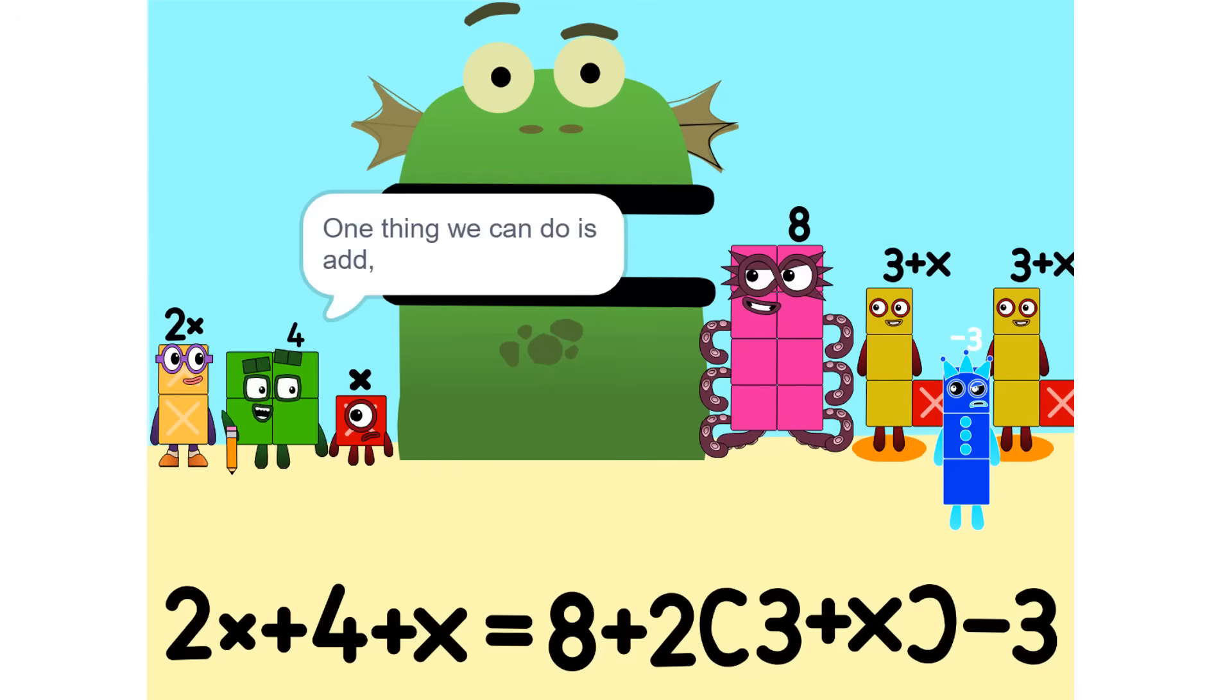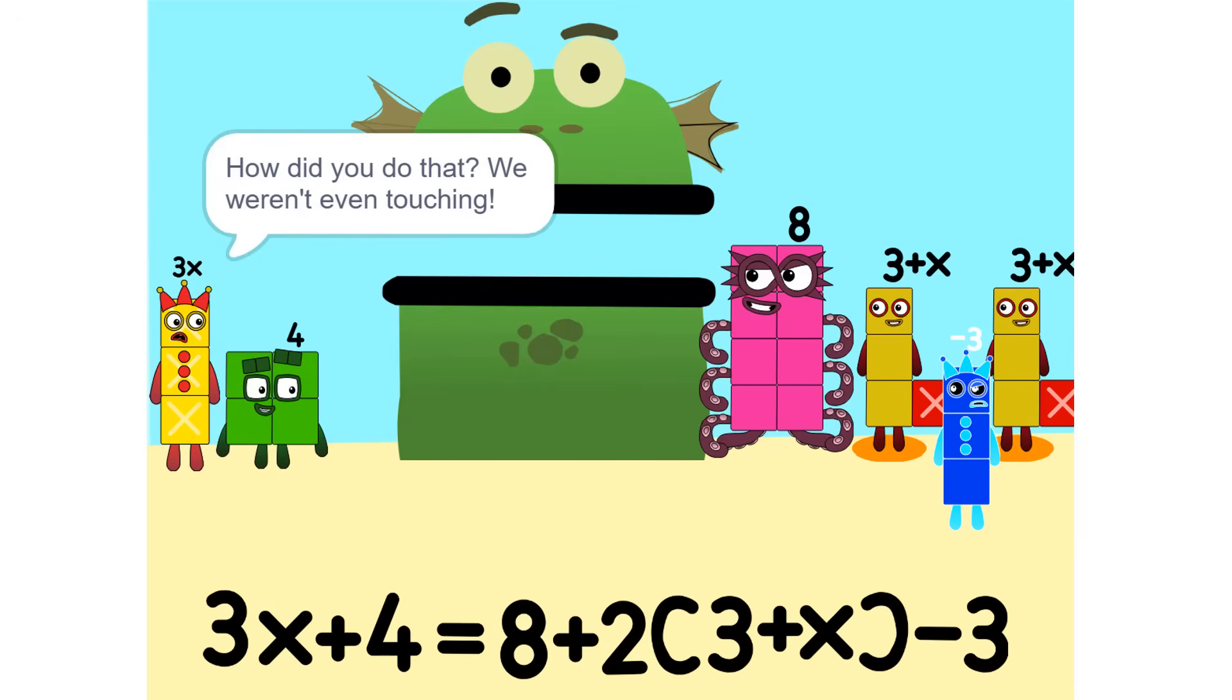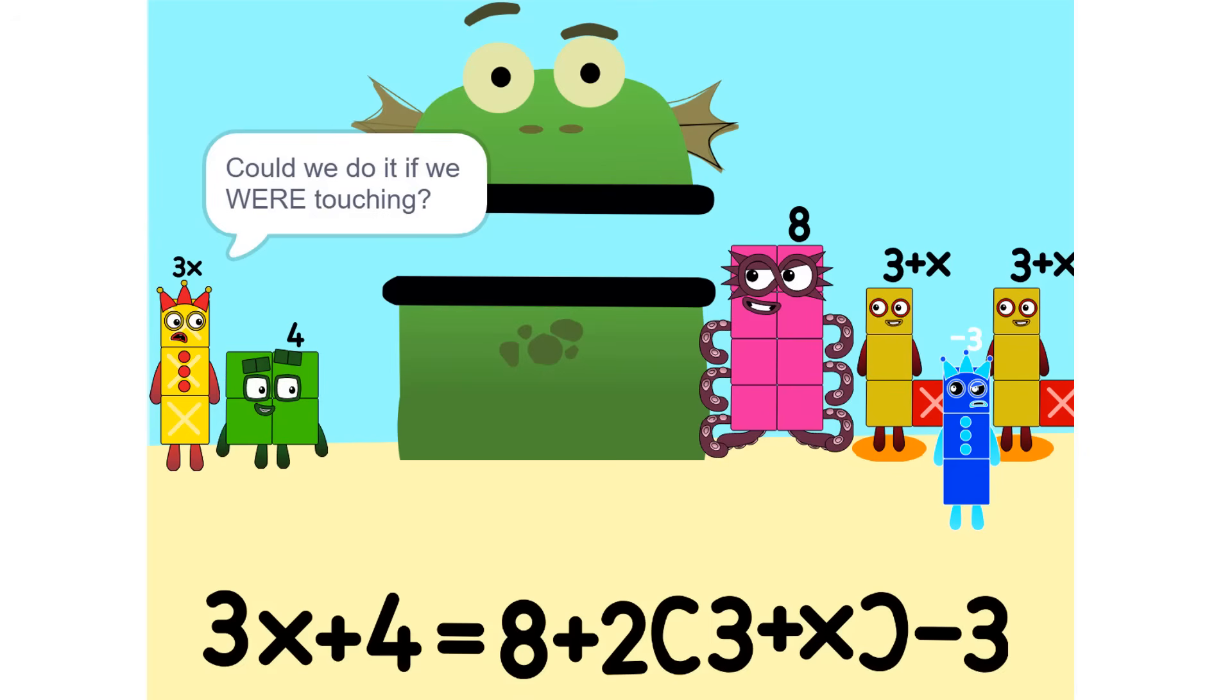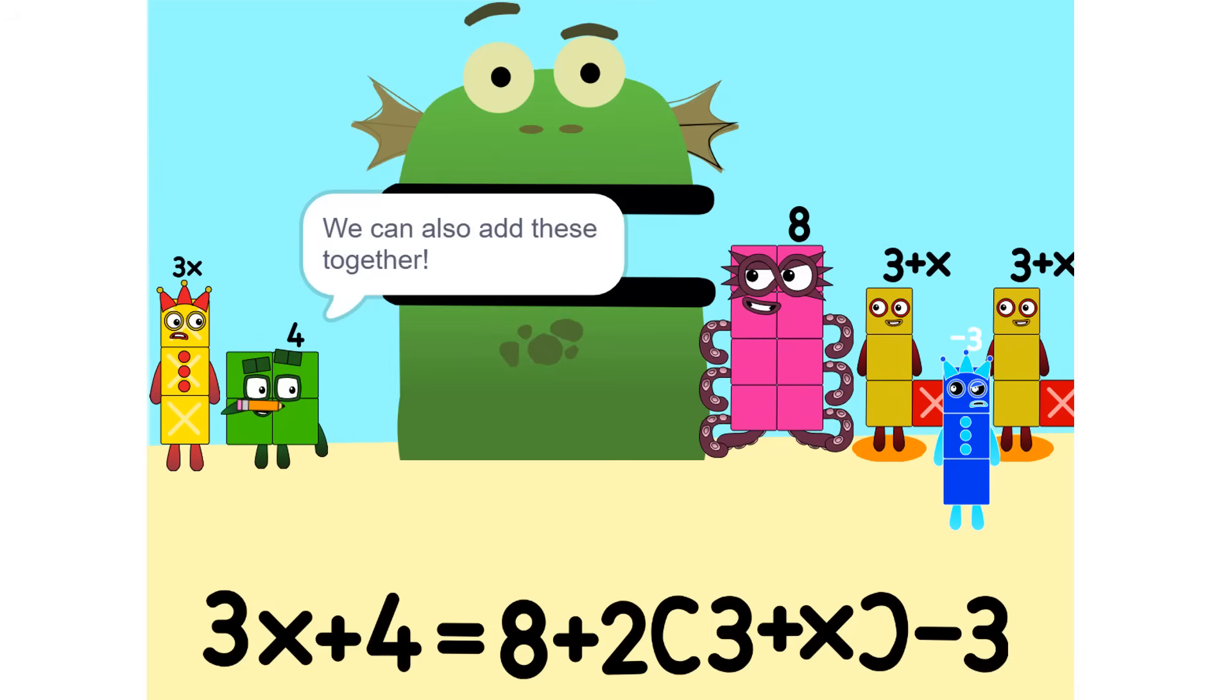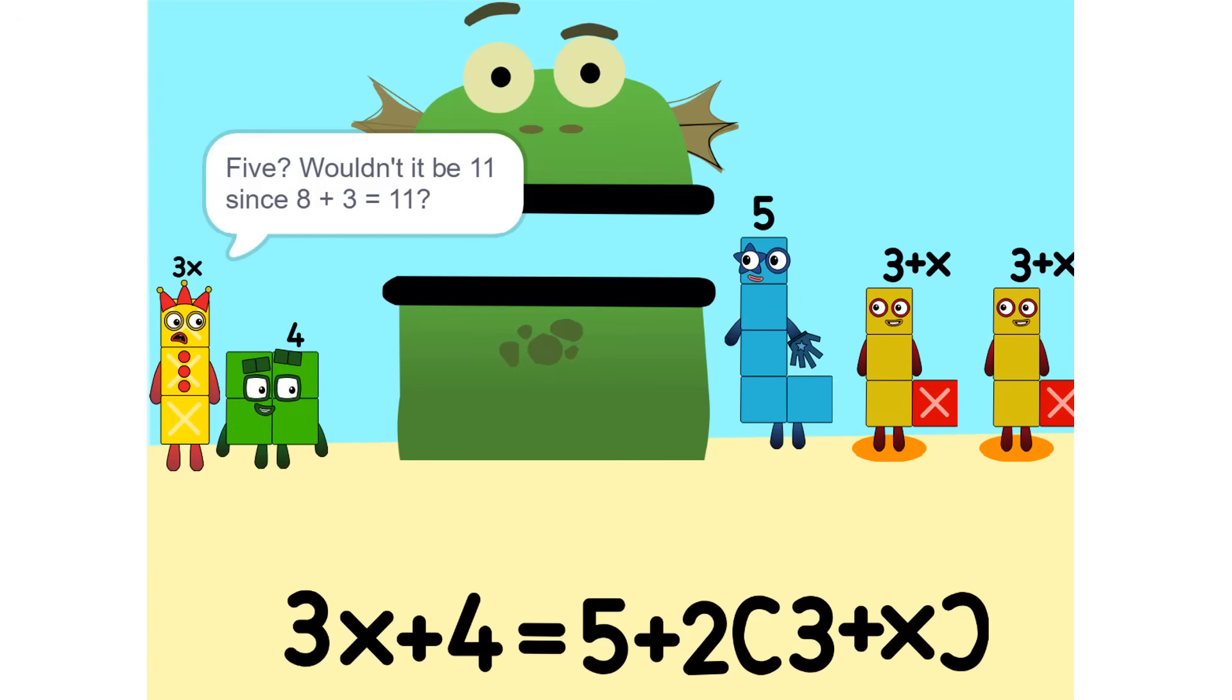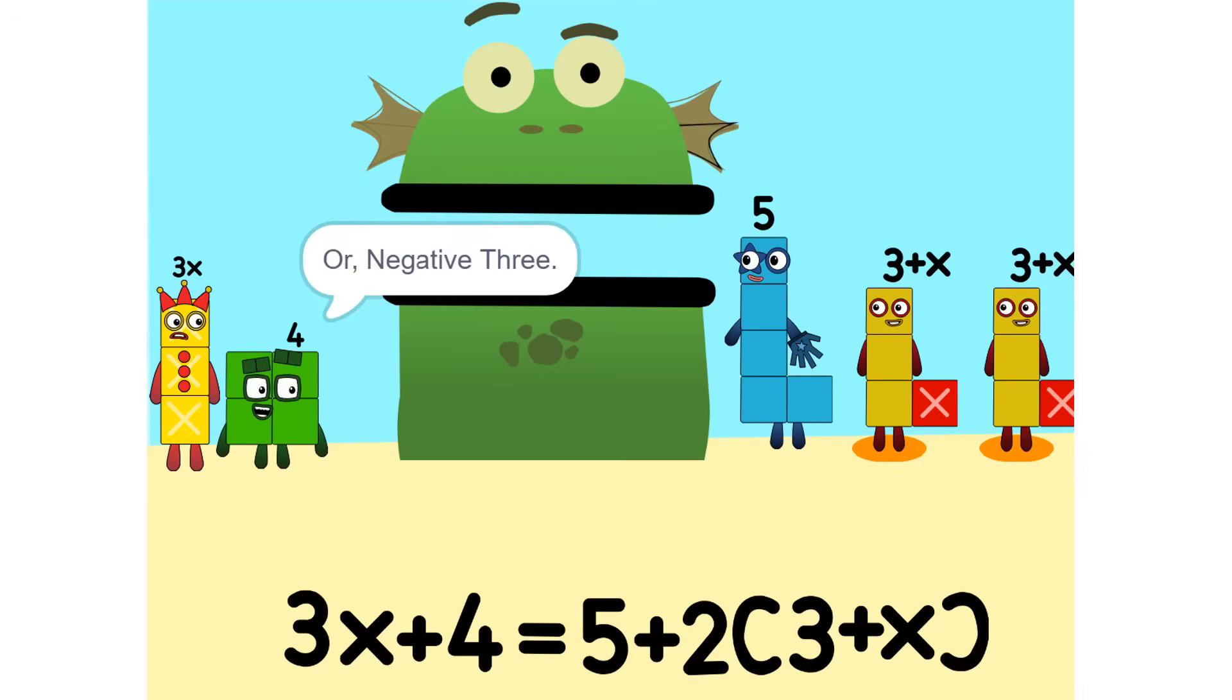One thing we can do is add these two together. How did you do that? We weren't even touching. They don't have to be. Could we do it if we were touching? Yeah. We can also add these together. Five. Wouldn't it be 11 since 8 plus 3 is 11? No. Because we're adding together 8 and minus 3, or negative 3. So it's 5.